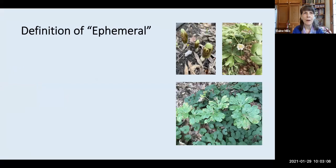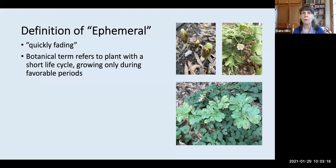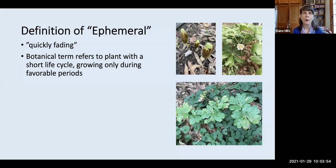First, a definition of ephemeral. You may use this term when speaking about something that is quickly fading. In botanical terms, we're referring to a plant with a short life cycle, growing only during certain favorable periods. You may have heard of two types of ephemerals: desert and mud flat ephemerals. Those two are plants that take advantage of water conditions at certain periods. In the case of desert plants, they'll bloom and be pollinated and then go back to a dormant state, blooming only when there are rainstorms.